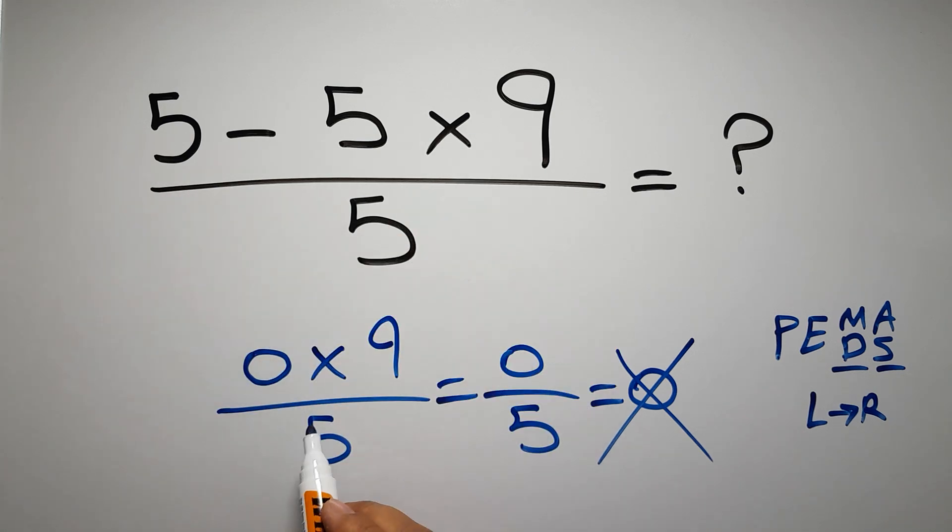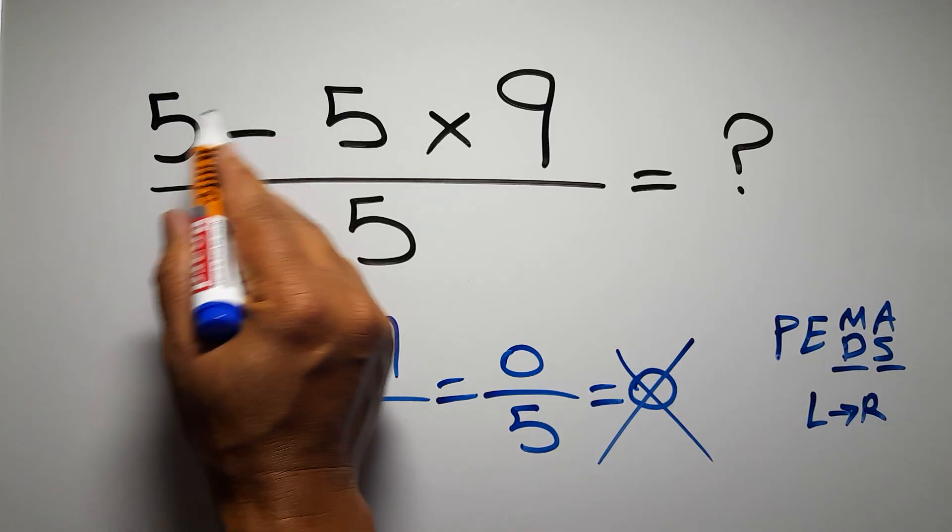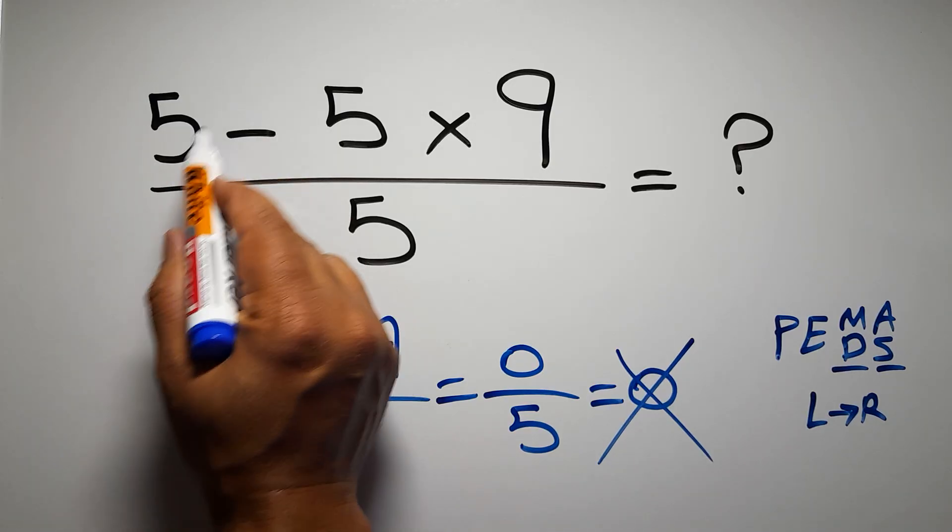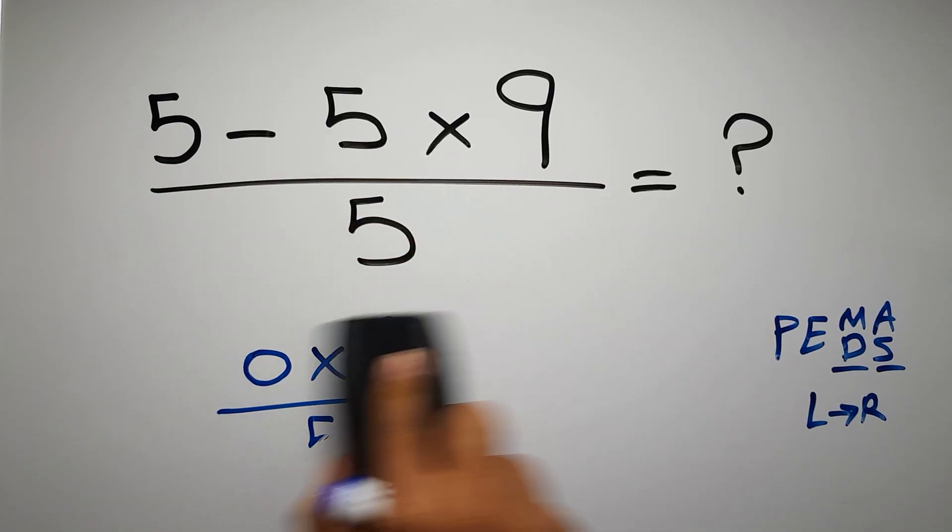If you do this subtraction before this multiplication, it is wrong because in PEMDAS multiplication comes before subtraction. Okay, so first 5 times 9, which equals 45.